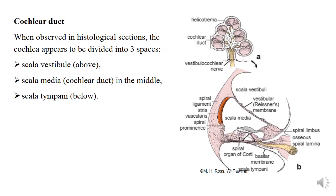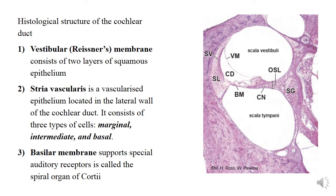The cochlear duct is a spiral fern-like space of triangular cross-section containing endolymph. It consists of three spaces: scala vestibuli, scala media, and scala tympani. The cochlear duct is bounded by the vestibular membrane or Reissner's membrane, stria vascularis, and basilar membrane. The vestibular membrane consists of two layers of squamous epithelium. The stria vascularis is an epithelium containing many blood vessels and consists of three types of cells: marginal, intermediate, and basal. The basilar membrane supports the special auditory receptors.